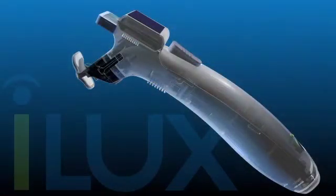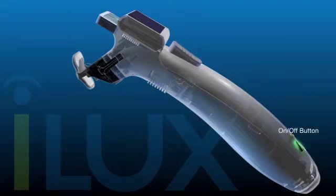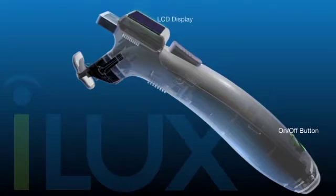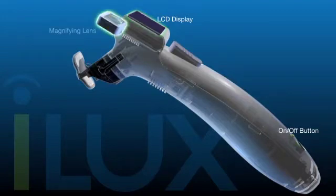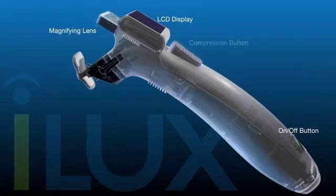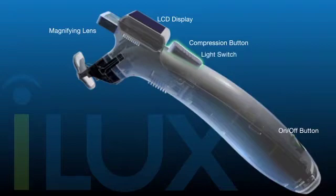The EyeLux device enables quick evaluation and then treatment of dysfunctional glands. The on-off button powers up the device and starts a series of self-tests. The LCD displays data and status messaging during the procedure. A magnifying lens provides a close-up view of the eyelid margin. The compression button squeezes the eyelid. A slide switch on the compression button turns on a light-based heat source to warm the eyelid. The EyeLux is powered by rechargeable batteries.